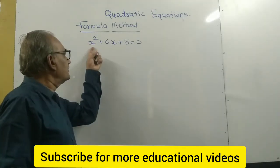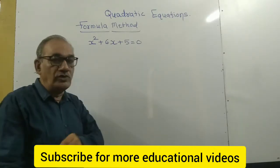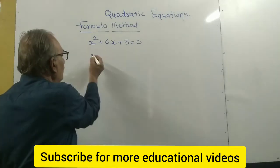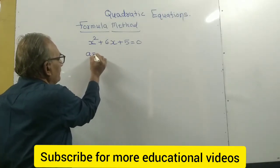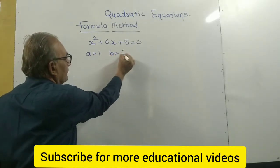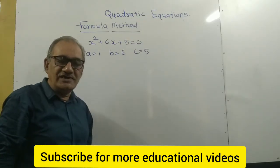Now I'm solving this equation x² + 6x + 5 = 0 by formula method. First, I'll write the format. For ax² + bx + c, I'll identify the a, b, c values.